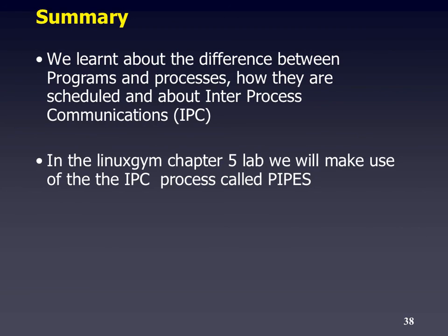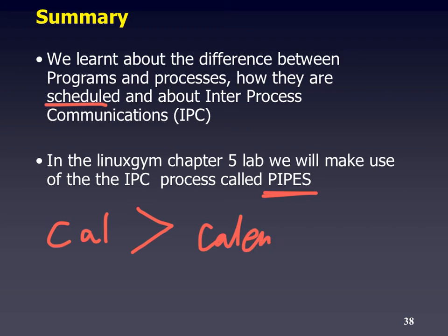We've learned about the differences between programs and processes and scheduling. Most modern operating systems do multi-processing with multiple CPUs and threads, even on the Raspberry Pi, which is a quad-core processor. In Chapter 5 on Linux, we'll make heavy use of inter-process communication using pipes to pass output from one program to another. The greater-than sign is also a special form of IPC — it's a special type of program internally called 'write to a file.'